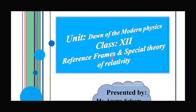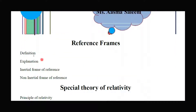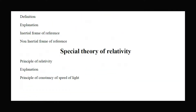In classical physics, we discuss concepts related to relative motion with reference to the speed of light, which causes changes in moving bodies and objects. This is a very important topic — the special theory of relativity — and it is the second topic of unit number 18. We will discuss the frame of reference, define and explain it, and see its types: inertial frame of reference and non-inertial frame of reference. The second part of the lecture is the special theory of relativity, and we will discuss its two main postulates: the principle of relativity and the principle of constancy of the speed of light.